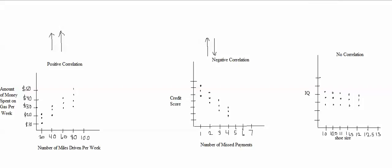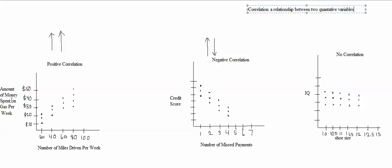A correlation is a relationship between two quantitative variables. That's the definition you'll usually hear for a correlation. It's also a relationship in which a person's value on one variable is at least roughly predictable based on their person's value on the other variable, and I'll talk about what I mean by that.